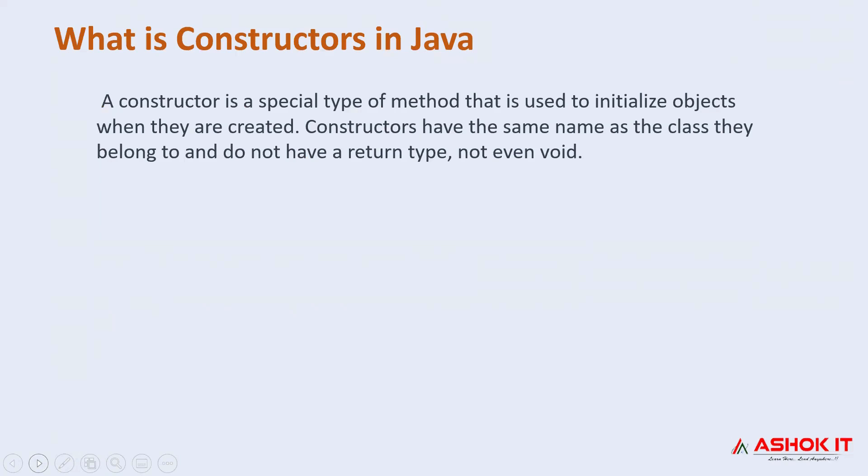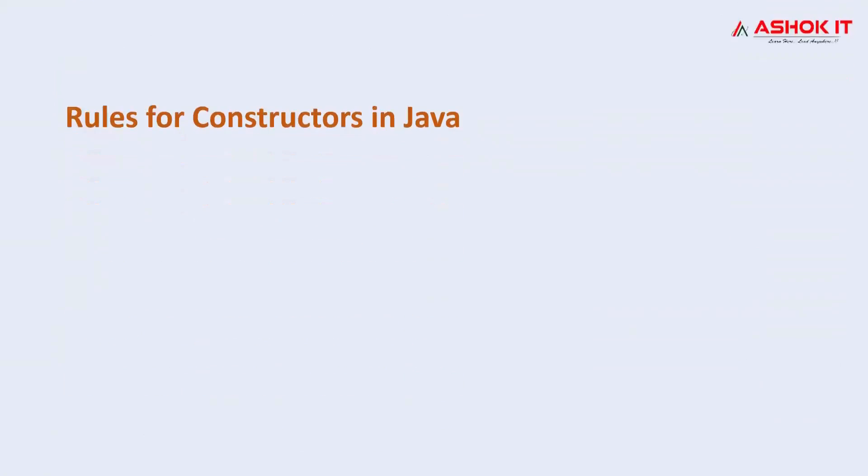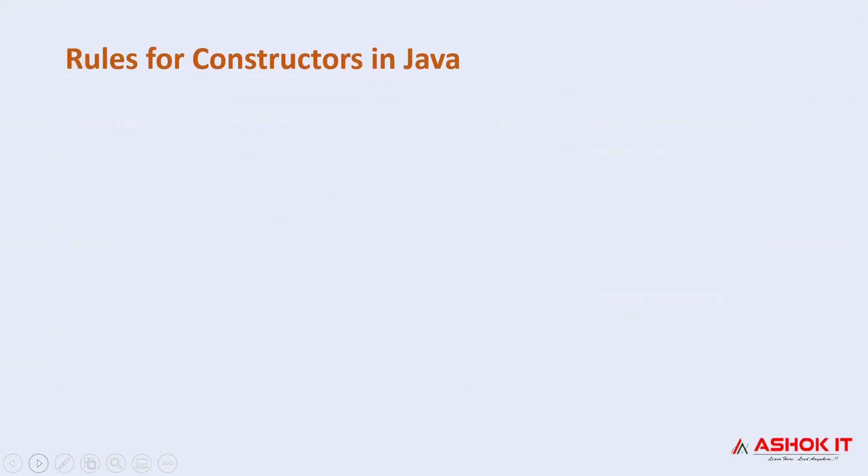We shall discuss the default constructor as well as other types of constructors in the upcoming concepts. For now, let's understand when exactly a constructor is called. A constructor is called when an object or instance is created. Now we shall move ahead with the next topic, which is the rules for constructors in Java.